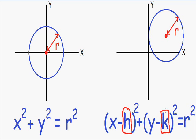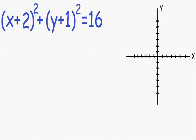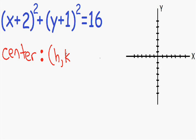That's my brief introduction — let's get started with an example. We have x plus 2 squared plus y plus 1 squared equals 16. The first thing we always want to find is the center of the circle. The center is written in the form (h, k), where h is the x-coordinate of the center, and the x-coordinate is always found next to the x-term.